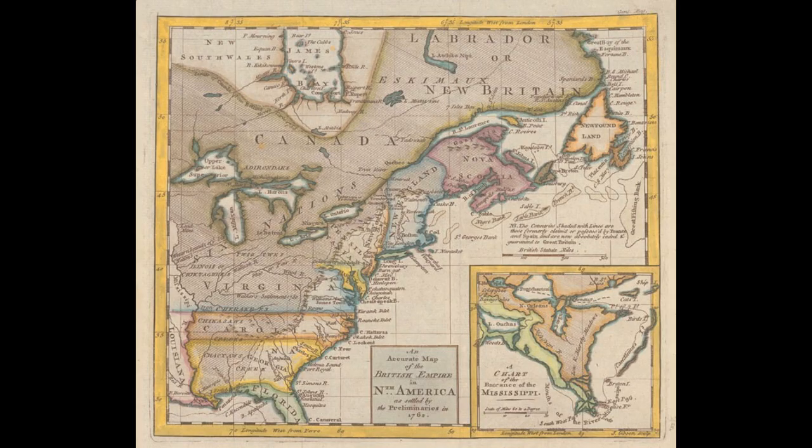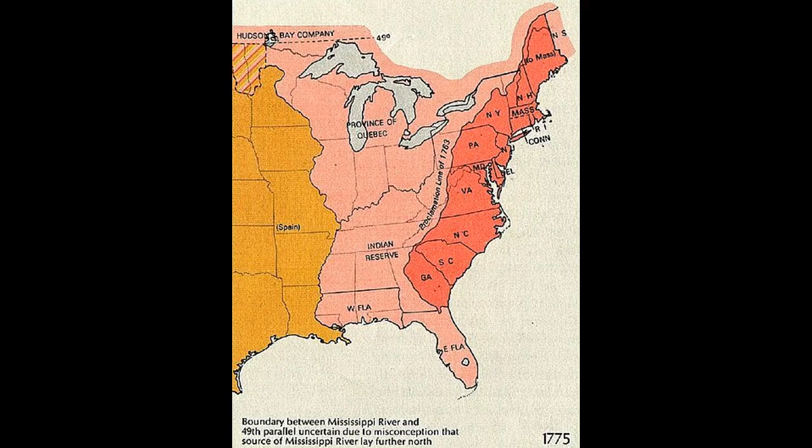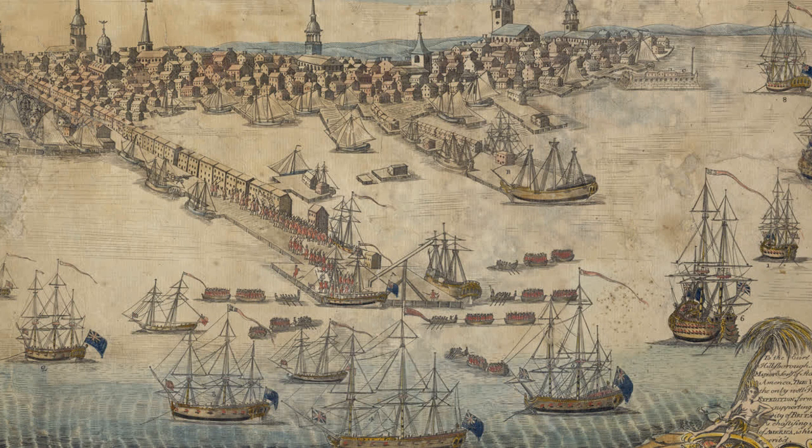The Quebec Act was also intended to address the issue of taxation. Under the terms of the Act, the British government agreed to exempt Quebec from the taxes that had been imposed on the American colonies. This exemption was seen as a means of placating the French-speaking population of Quebec and preventing them from joining the American Revolution, though it was also seen as a violation of the principles of self-governance that had been championed by the American revolutionaries.